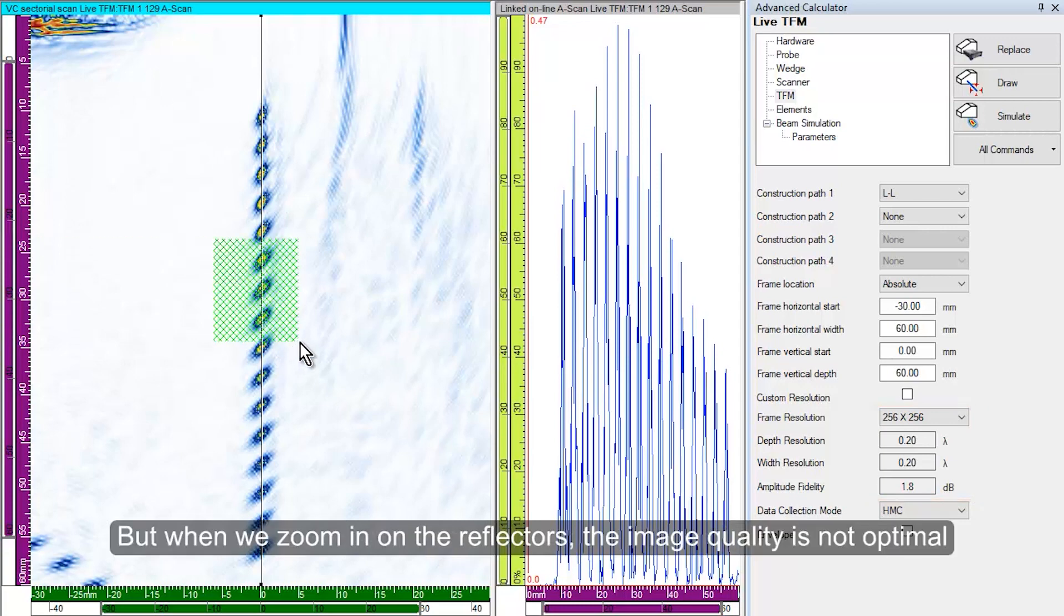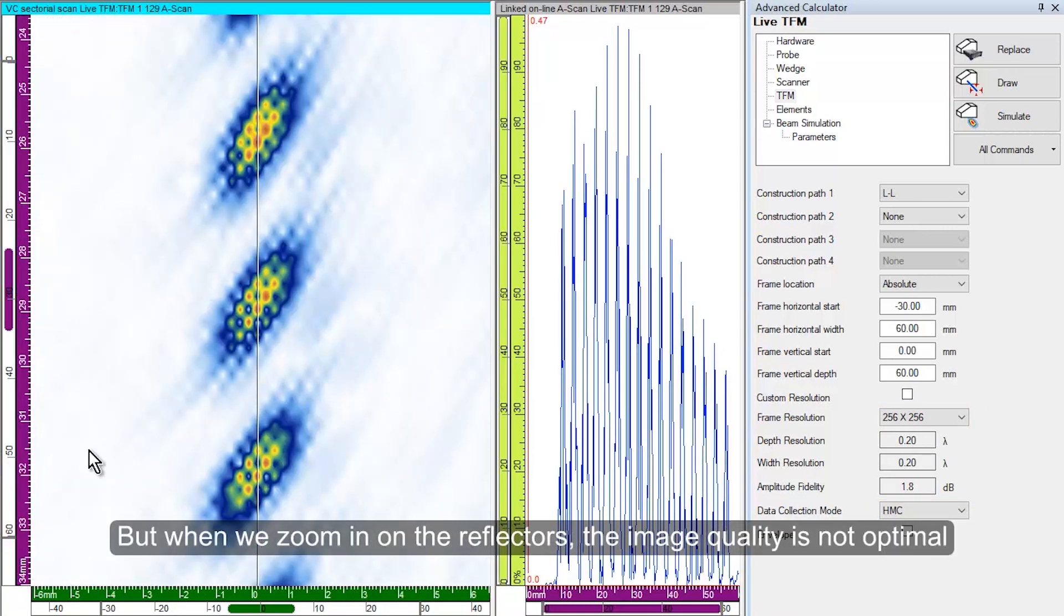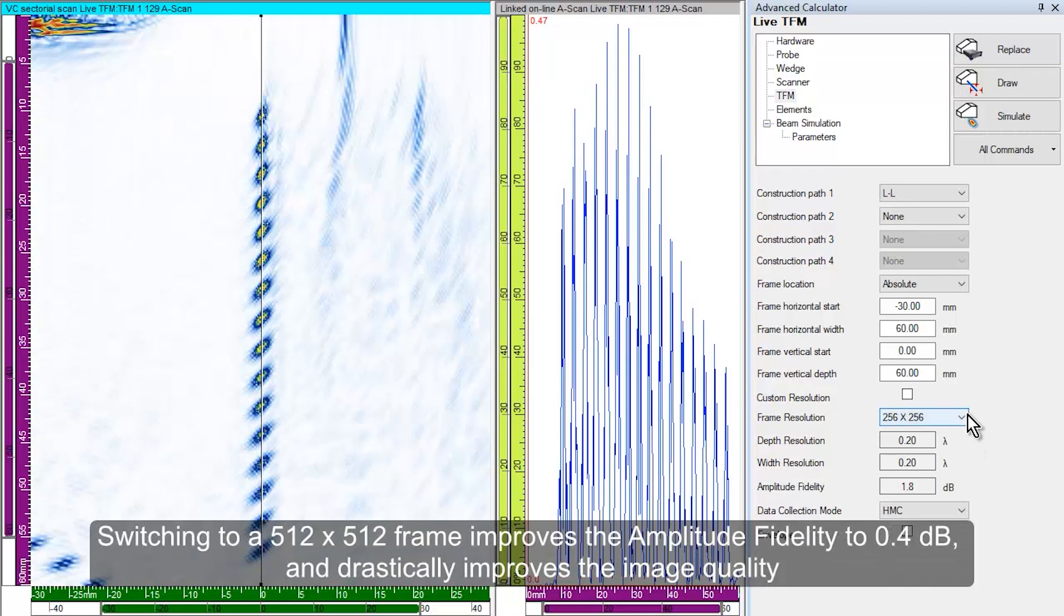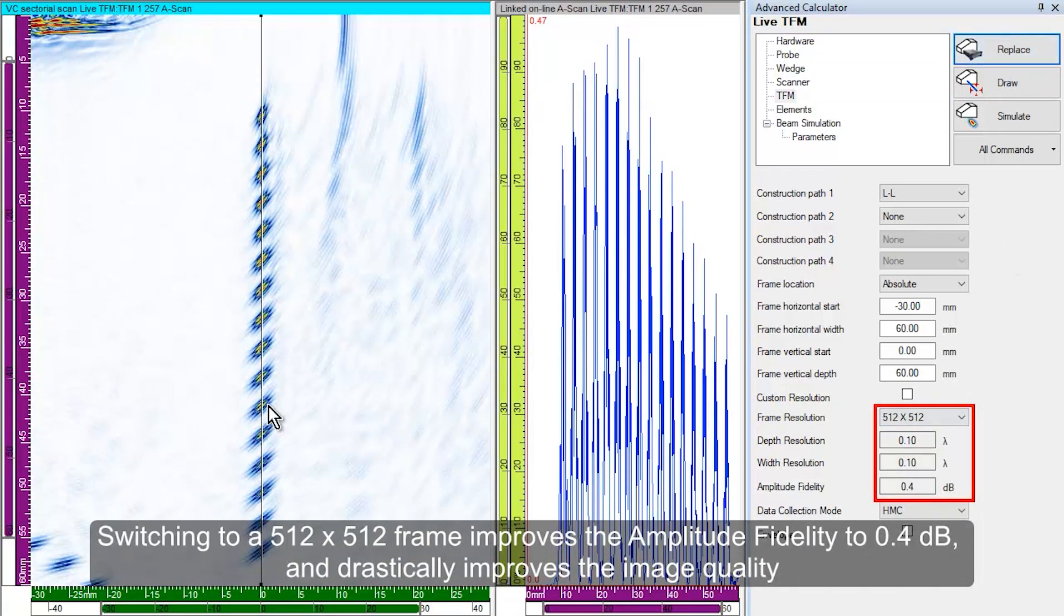But when we zoom in on the reflectors, the image quality is not optimal. Switching to a 512 by 512 frame improves the amplitude fidelity to 0.4 dB and drastically improves the image quality.